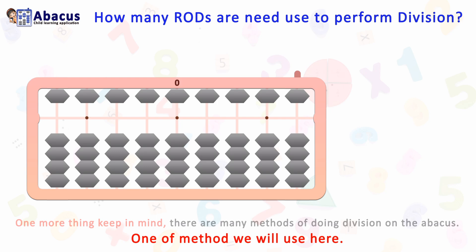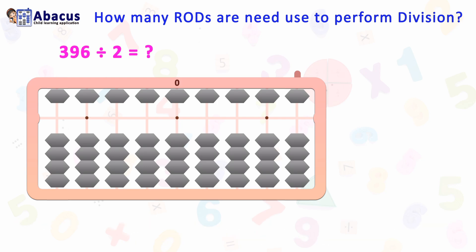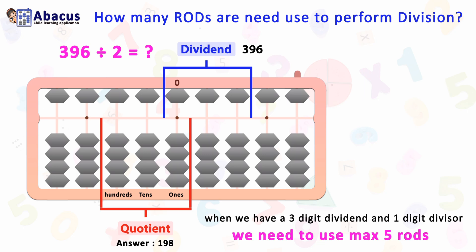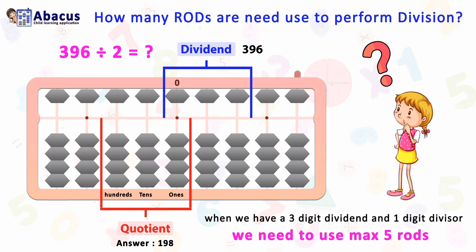First, check with 396 divided by 2. When we have a three-digit dividend and one-digit divisor, we need to use a maximum of five rods. Here 396 is the dividend and 198 is the quotient — the result of this division. But how to decide? Here we have to use maximum five rods. Let me explain this trick — the method is most important in division.